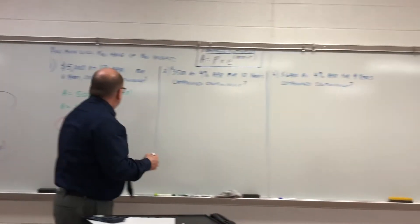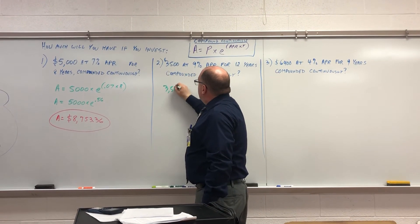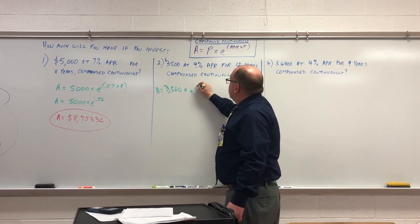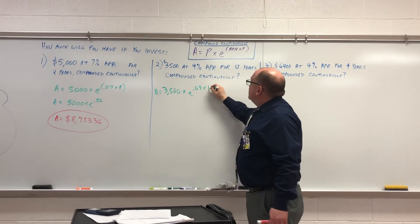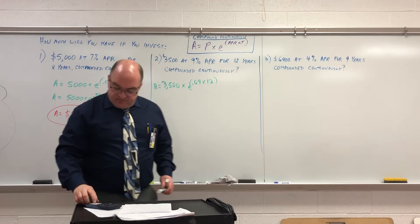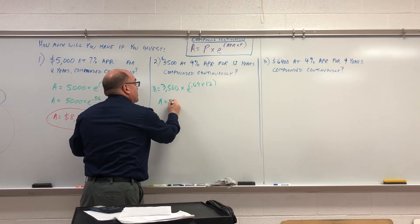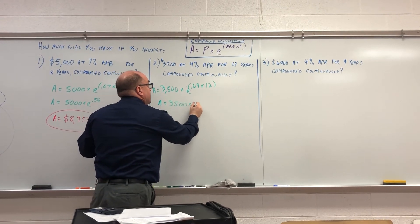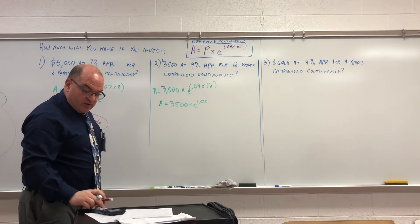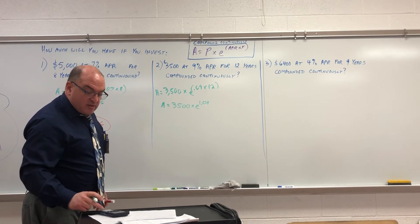Here's another example. Once again, we're going to use the same formula. 3,500 times E to the 0.09 times 12, which gives E to the 1.08. So A equals 3,500 times E to the 1.08.